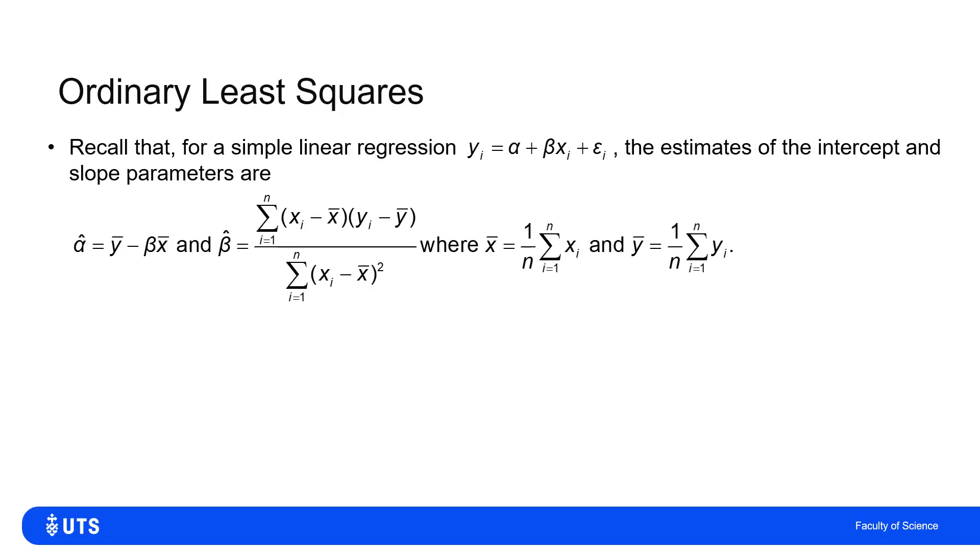We introduced, or maybe reintroduced, in the videos on simple linear regression the idea that if I had n observations of a predictor X and I was trying to explain or predict the response variable, or n observations of the response variable y,